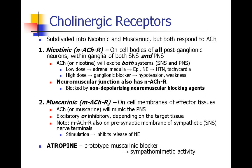Atropine is the prototype muscarinic blocker — it works on muscarinic acetylcholine receptors. For that reason, atropine is called a sympathomimetic drug. Atropine acts like a catecholamine because it blocks the function of acetylcholine at the muscarinic receptor, thereby blocking the parasympathetic response.